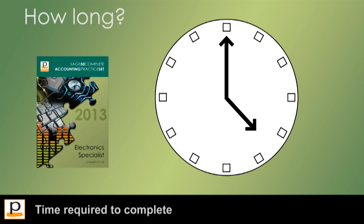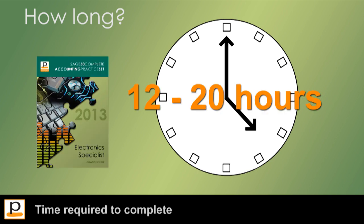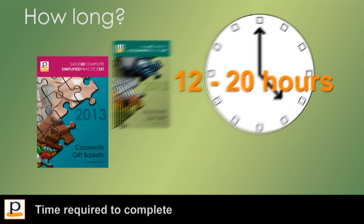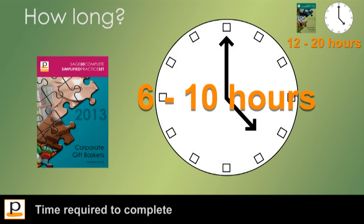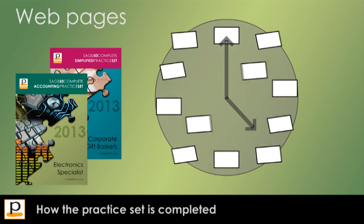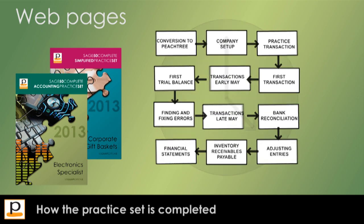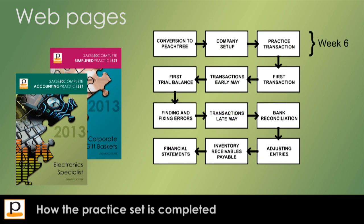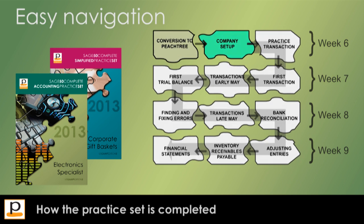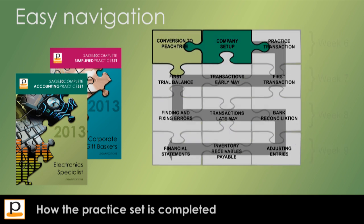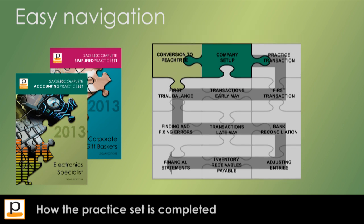The Electronic Specialist practice set can take between 12 and 20 hours for students to finish. The Corporate Gift Baskets practice set is about half this time. Both sets are completed across a number of pages, generally over a period of weeks throughout the semester. A navigation map is provided on each page so students know where they are up to and how many study hours are likely to remain.